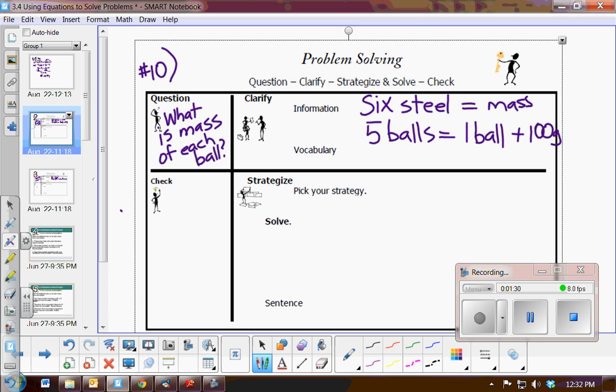The facts I'm given are that we have 6 steel balls, and they each have an equal amount of mass. We're told that 5 balls equal 1 ball plus 100 grams. They gave us a diagram in the book, so I think I don't need any other strategy but writing an equation.